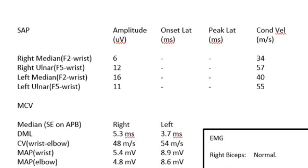This is typical of a demyelinated nerve. The ulnar response over here is 12 microvolts and 57 metres per second — that's perfectly normal. It's above the 5 microvolts and also above 50 metres per second. Let's have a look at the contralateral side for the left finger 2 response.